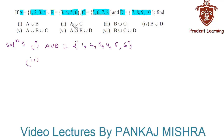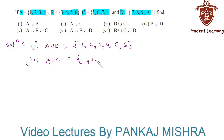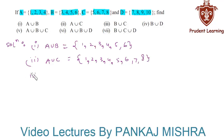In the second section we have A union C. Again, this is nothing but a set containing all the elements that are either in A or in C. So we'll have {1, 2, 3, 4, 5, 6, 7, 8}.